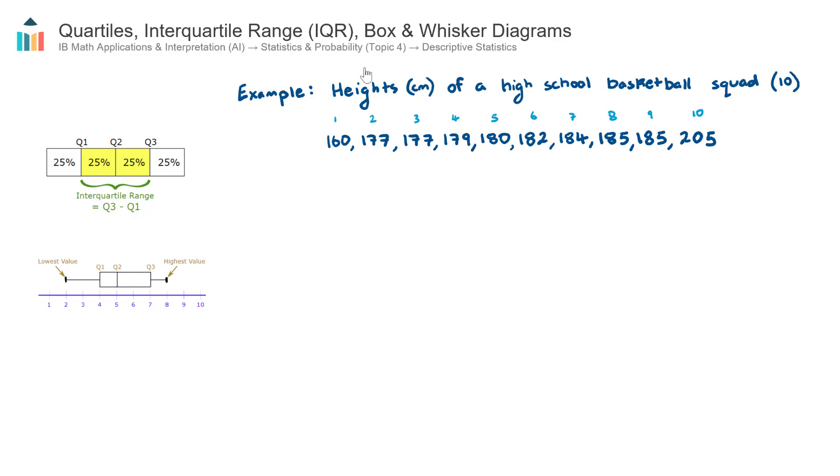Okay, let's have a look at this example here. I have the heights in centimeters of a high school basketball squad of 10 players. So the shortest player was 160 centimeters. The second shortest player was 177, so a bit of a jump there. And then players 2 through 9 were pretty even in their height, so there wasn't a large range there. Then the 10th player looks like he's a bit of an outlier, 205 centimeters.